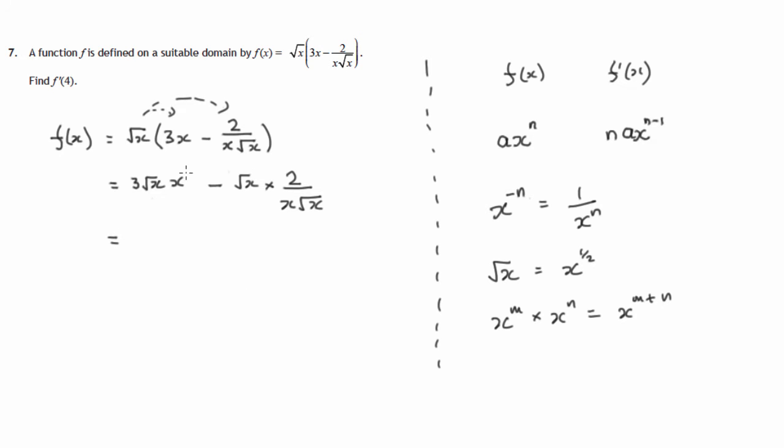Now, because we're going to be dealing with powers of x when we differentiate, let's change root x to x to the half. And we know that x is just x to the power 1. If we look at this, we can cancel off this factor of root x. Remember, multiplying fractions, top factors, bottom line factors. If there's a factor in common, we can divide top and bottom by that factor and cancel it out.